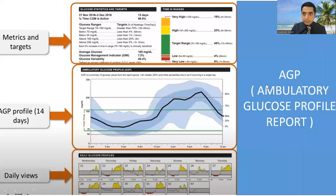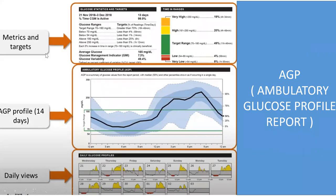Let's start by looking at the AGP report. When we look at the AGP report or the ambulatory blood glucose profile report, it has three main components. In the first part we see the metrics and the targets — the glucose statistics and targets — and it shows the time in ranges. Then we have the ambulatory glucose profile which shows the 14-day blood glucose readings over the last 14 days when the sensor has been worn. The last part shows the daily glucose profiles in which we see the day-to-day variations in blood glucose. Across various sensors, the AGP report is standardized to make it easy for reference.